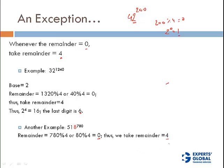So for 32^1240 we compute 2 raised to the power 4, which is 16, so last digit is 6. For 518^780 we compute 8 raised to the power 4: 8 × 8 = 64 (last digit 4), and 4 × 8 = 32 ... wait — tracking last digits: 8×8 → 4, and 8×8 → 4, so 4 × 4 = 16, last digit 6. The answer is 6. You don't need the full value — just the last digit.